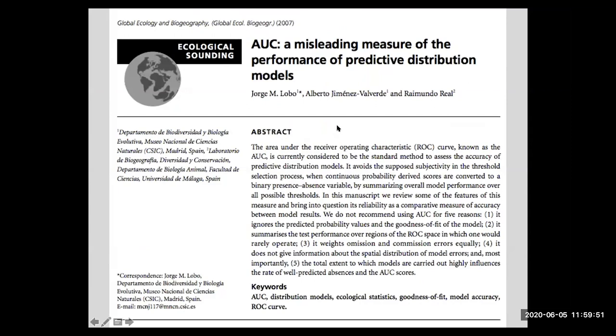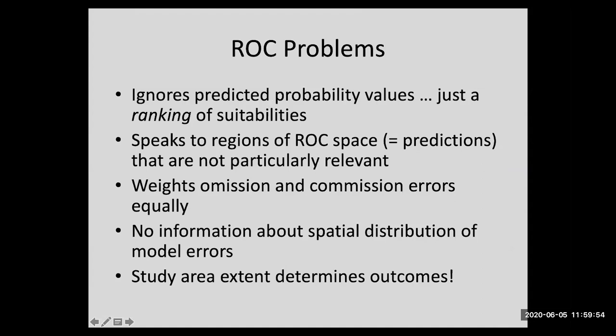Again, there's quite a variety of applications and iterations of the ROC test. But I really want to point you towards some of the problems that were pointed out. So let's look at this Lobo paper. It points out, first of all, that it's ignoring the actual predicted probability values. It's just a ranking of suitabilities. It speaks to regions of this two-dimensional space that are not very relevant. Here's the one I mentioned earlier. It weights omission and commission errors equally. It doesn't include any information about the spatial distribution of model errors. And the extent of the study area determines the outcome.